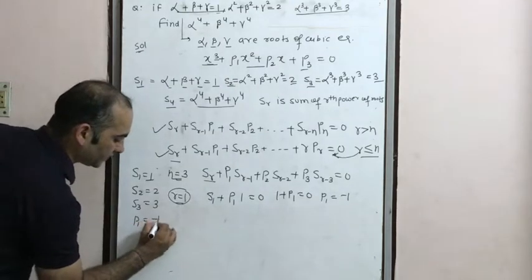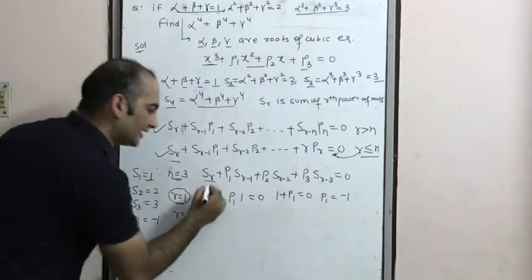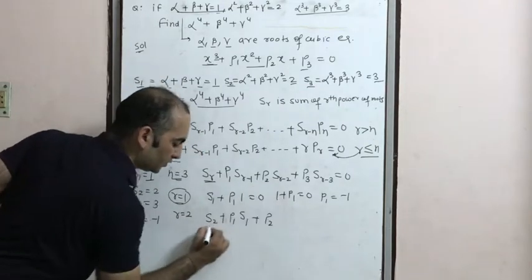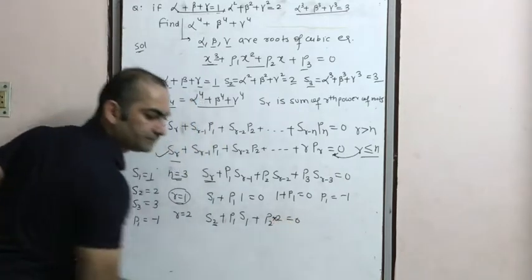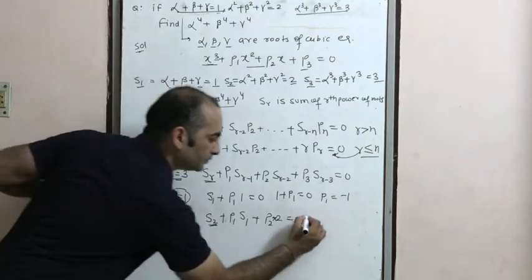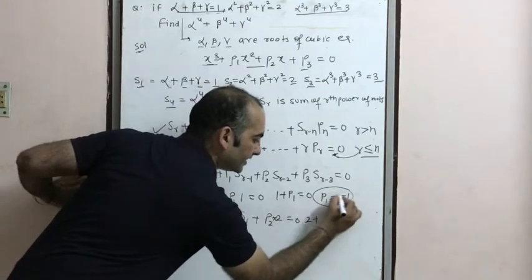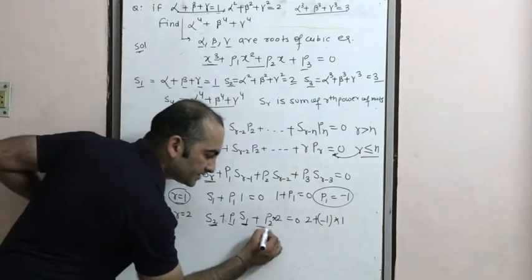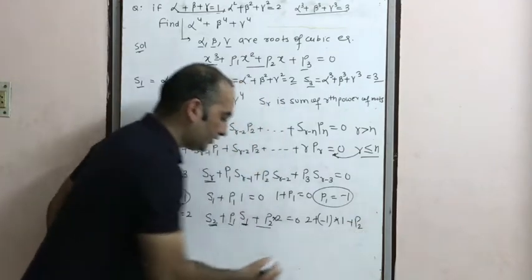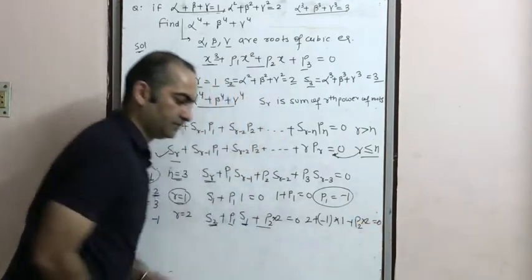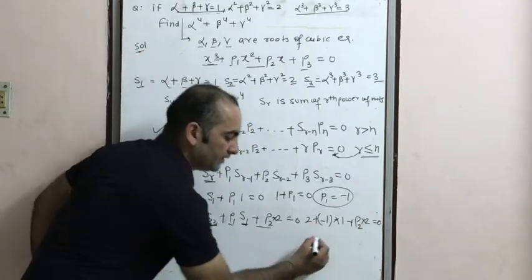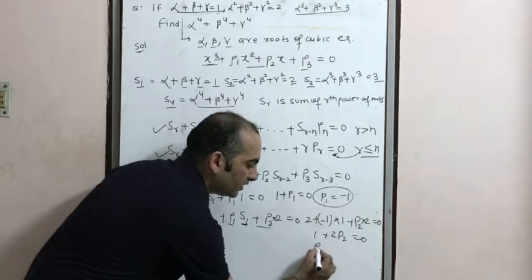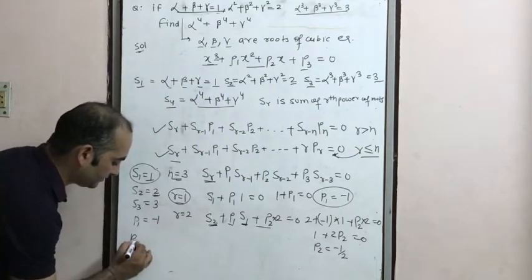Putting r=2: S2 + p1·S1 + p2·2 = 0. Substituting S2=2, p1=-1, S1=1: 2 + (-1)(1) + 2·p2 = 0, which gives 1 + 2·p2 = 0, so p2 = -1/2.